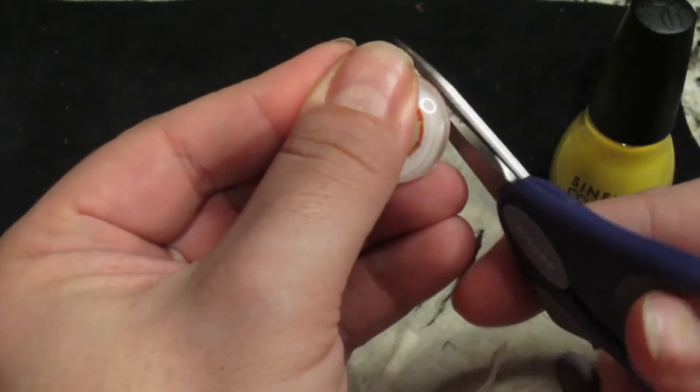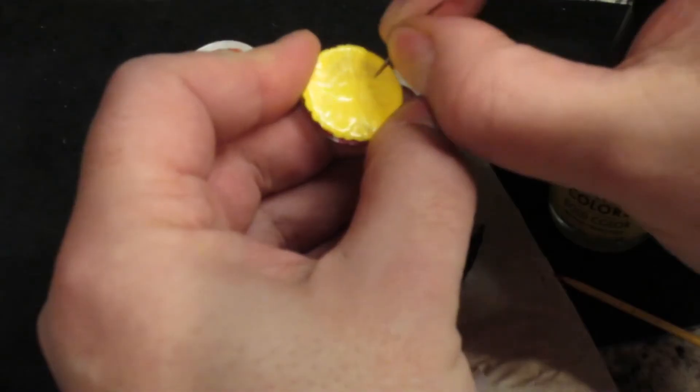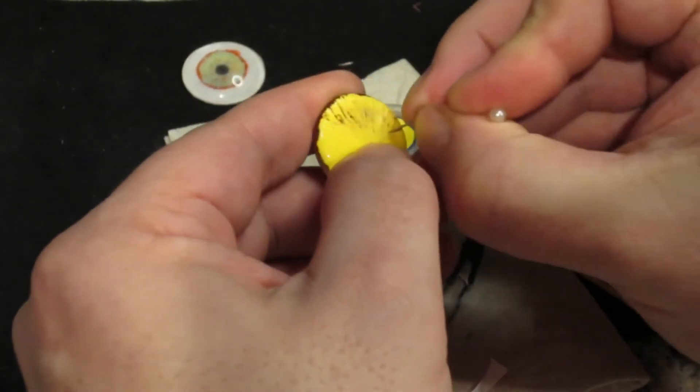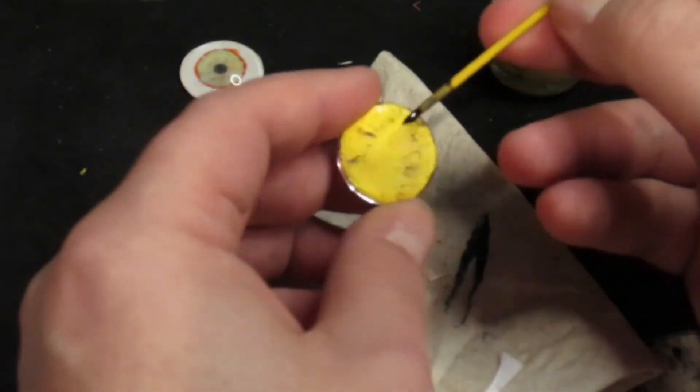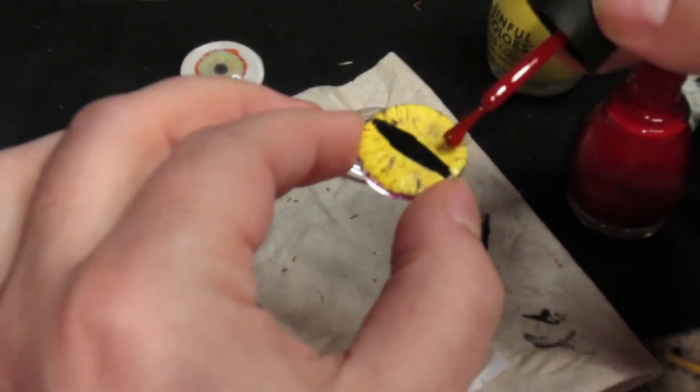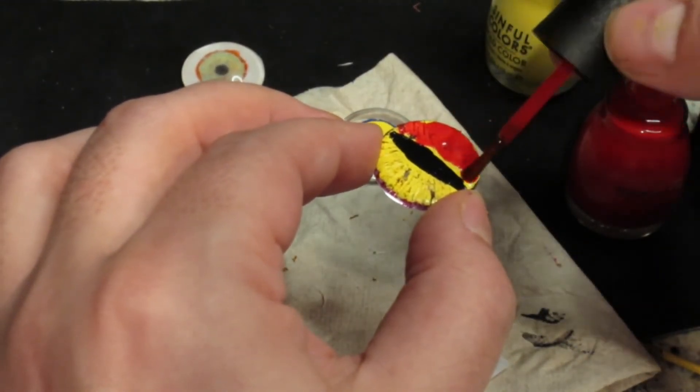Once it's dry, take a little pair of scissors and trim off any excess paper. For the dragon eye, I repeat the scratching process one more time so I can add a third color, this time a brighter red. I also add in some more black paint to cover any areas of the pupil that I may have scratched into unintentionally.